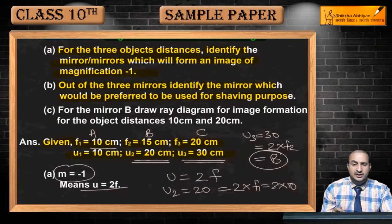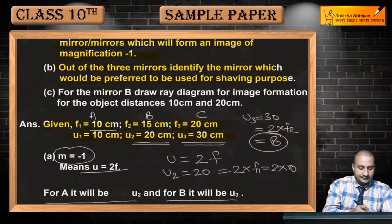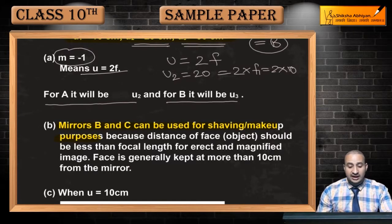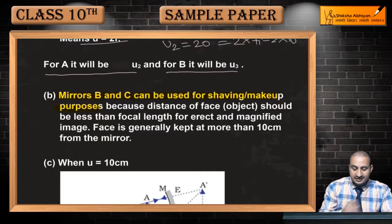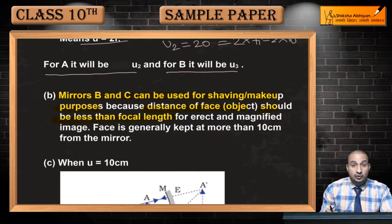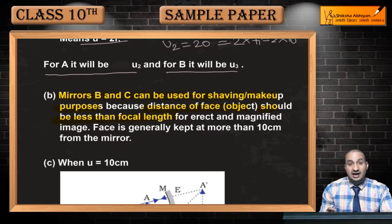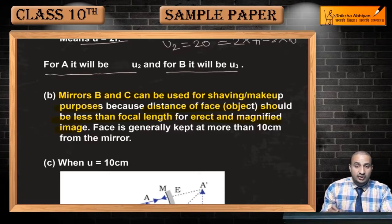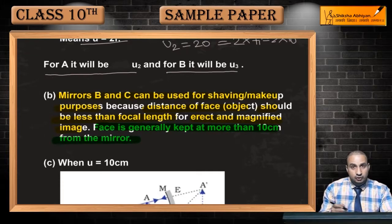Shaving ya makeup purpose ke liye. Kyunki jo shaving purpose ke liye hota hai, makeup purpose ke liye bhi concave mirror hum use generally karte hain. So mirror B and C can be used for shaving or makeup purposes. Mirror B and C, jinki focal length kitni kitni hai? 15 or 20 cm, in use kiya ja sakta hai. Ab kya reason hai is baat ka? Dekhiye, reason ye because distance of face, yani object yahaan par face hogi, should be less than focal length. Focal length se kam hona chahiye object ka distance. Lekin generally hum dekhte hain ki face ko more than 10cm duri par rakha jata hai mirror se.